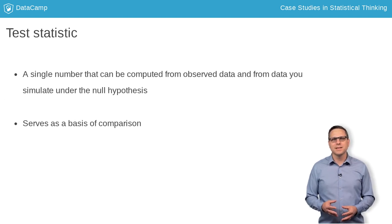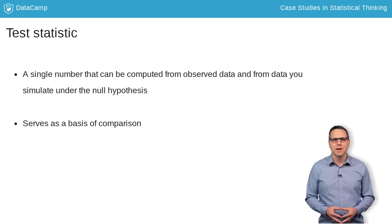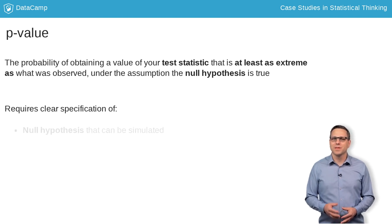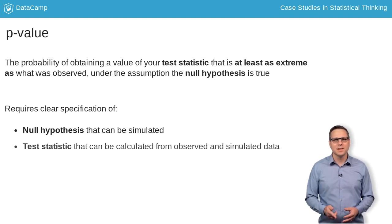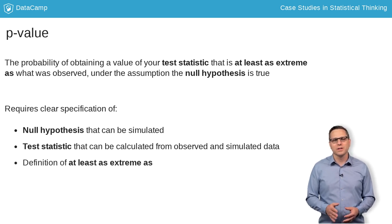As a reminder, a test statistic is a single number that serves as a basis of comparison between observed data and those that would be obtained if the null hypothesis were true. The p-value only makes sense if the null hypothesis, test statistic, and the meaning of at least as extreme as are clearly defined.